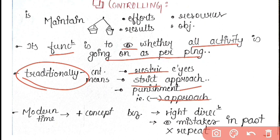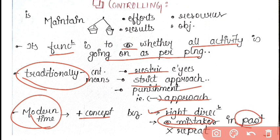But in modern times, right now, the concept is totally positive. Right now in controlling, what comes is to give right direction. If there are any mistakes, you should keep in mind that whatever mistakes happened in the past should not be repeated in future. In the present time, controlling is seen as a very positive aspect.